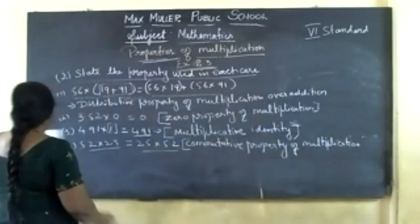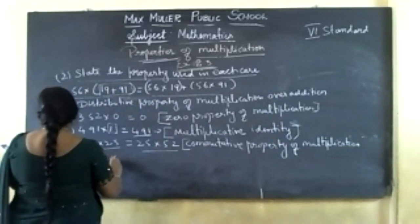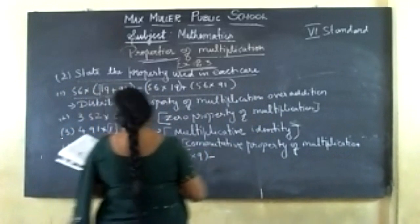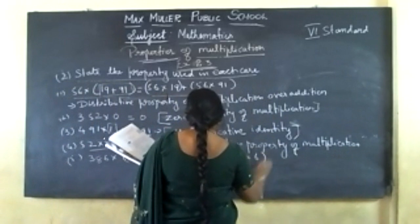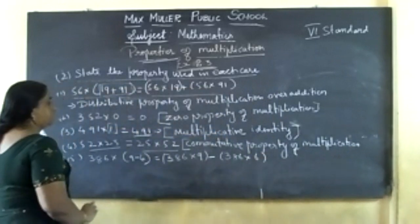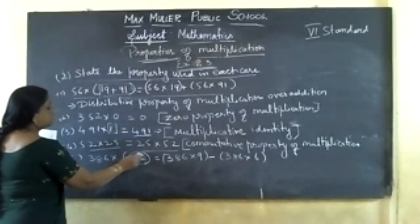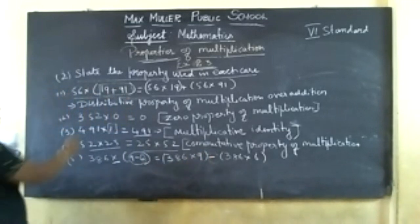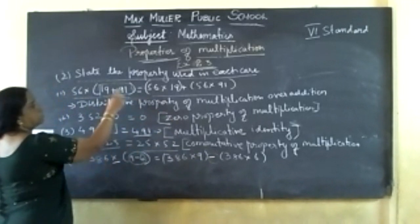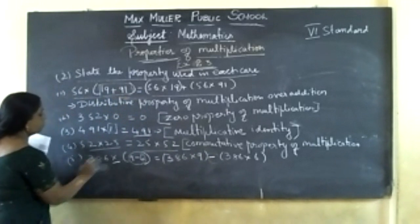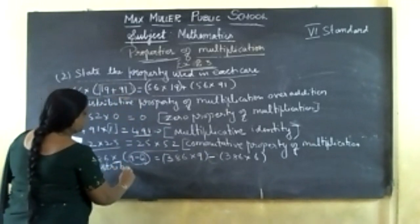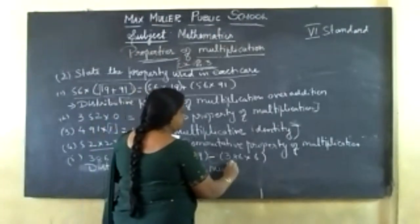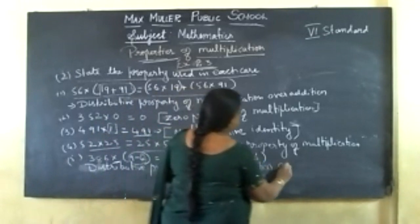Fifth one: 386 into 9 minus 6 equal to 386 into 9 minus 386 into 6. Here they divided — multiplication is there, but subtraction is also there. So you can say distributive property of multiplication over subtraction.